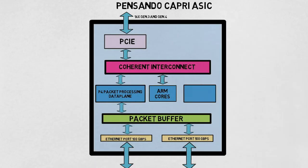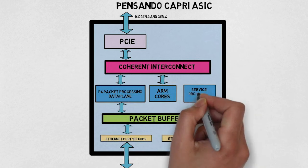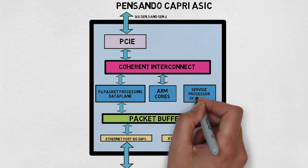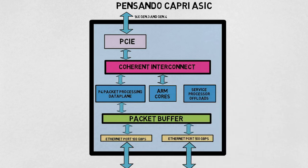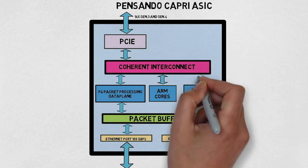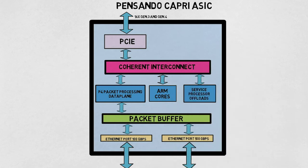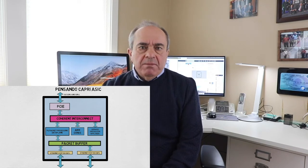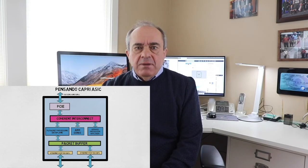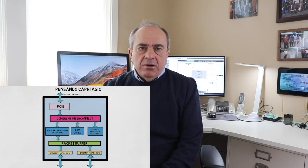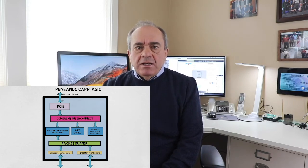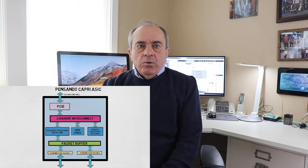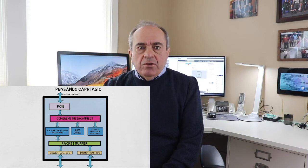Other vital components are the service processing offload modules. These modules are hardware modules dedicated to specific functions. Two functions that come to mind are encryption and compression. The encryption offload supports both symmetric encryption, for example AES, and asymmetric encryption, like RSA or elliptic curves. Compression and signature for data deduplication are also hardwired in this service processing offload module.